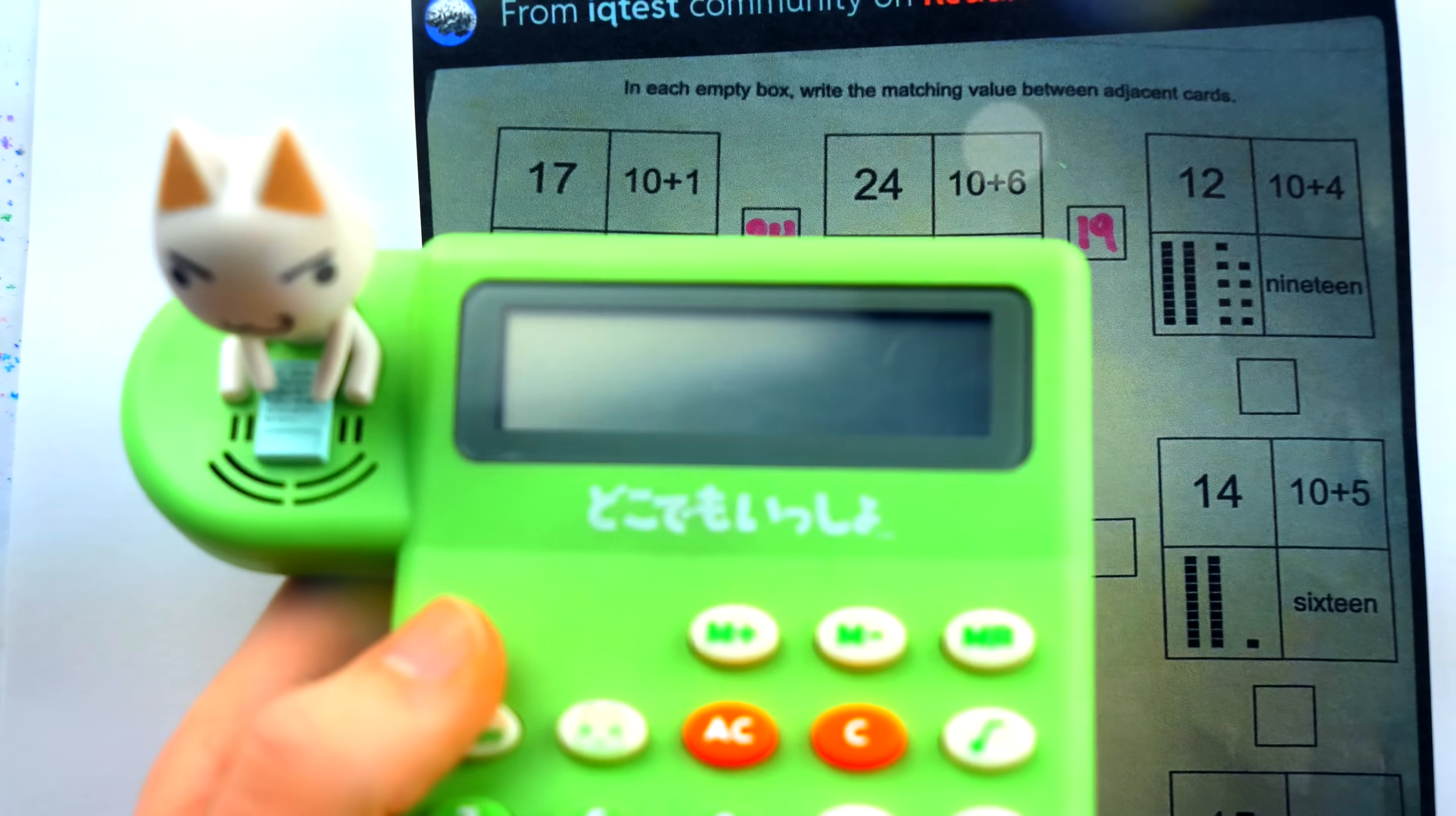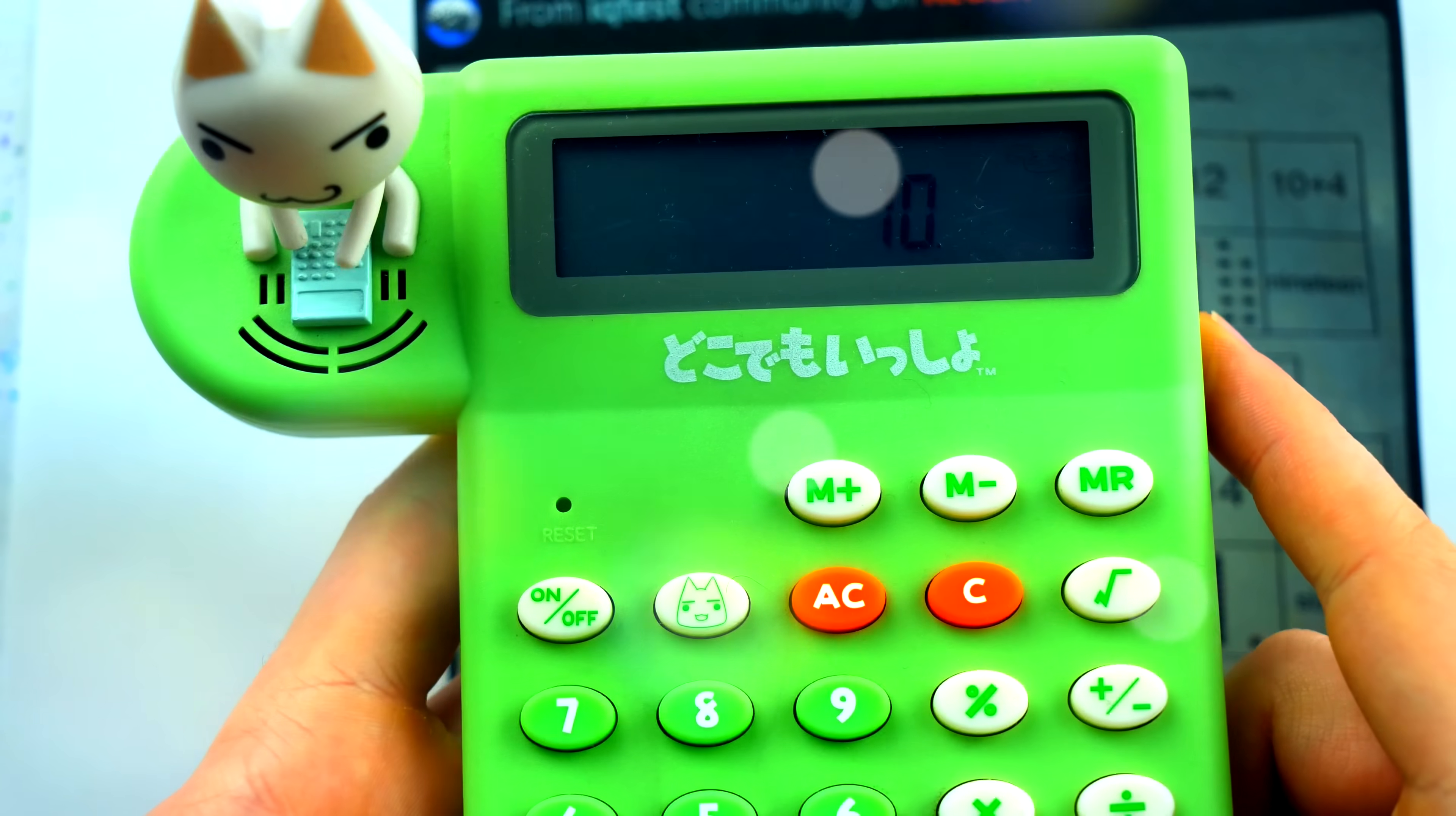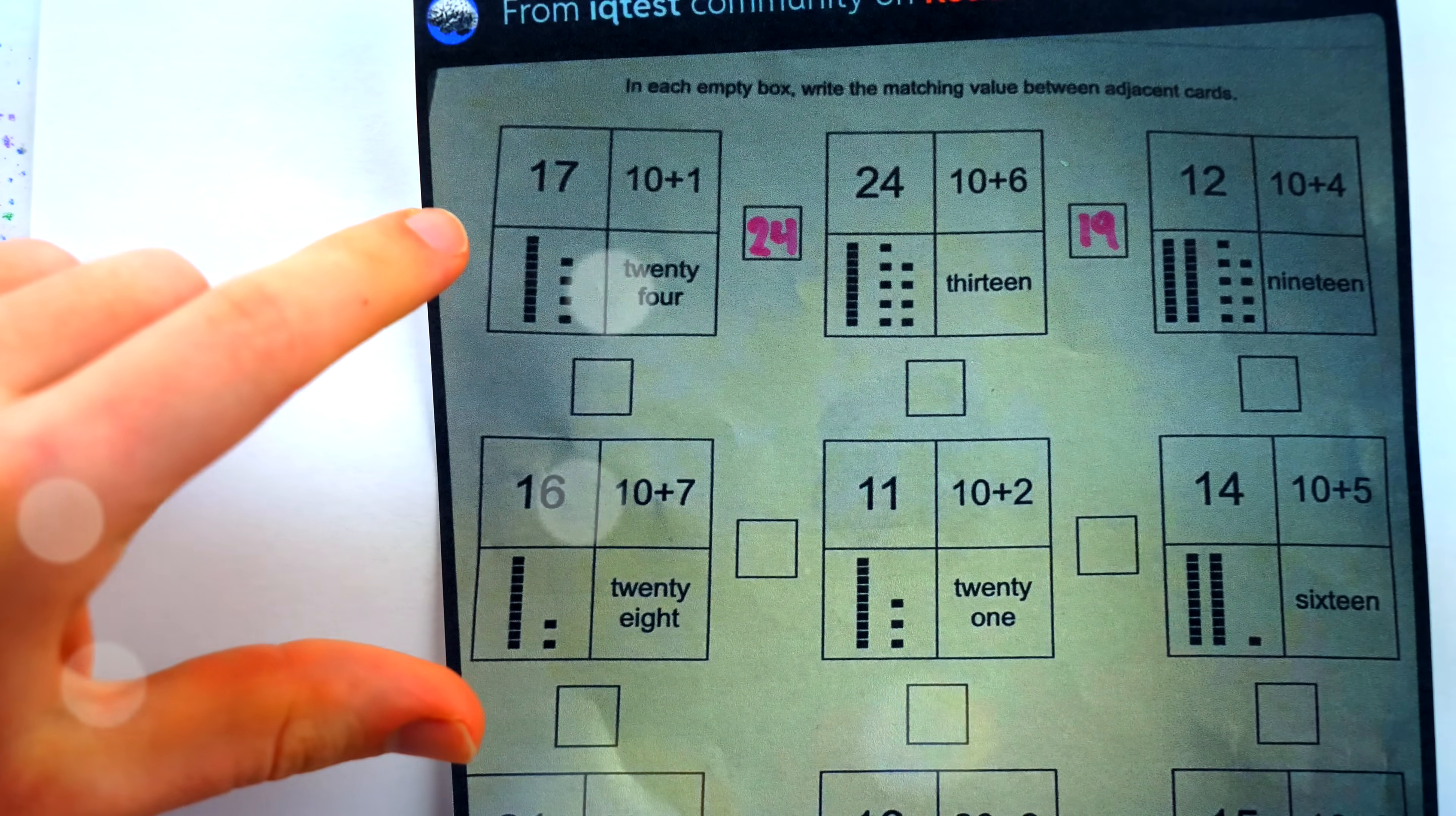All right, turn this bad boy on. We'll check. I think 17 is the match. Let's just check 10 plus 7. So 10 plus 7, and that is, okay, 17. So that is the number shared between those two boxes.